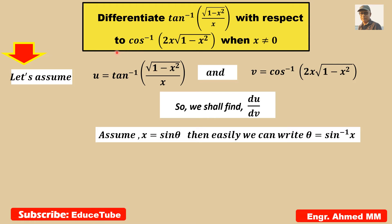So what we have to do first? We have to assume tan inverse of square root of 1 minus x squared by x as u. And the second part, cos inverse of 2x times square root of 1 minus x squared, we assume it as v. Now the question is: differentiate tan inverse with respect to cos inverse — that means this is u and this is v.